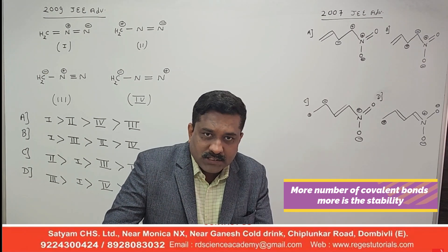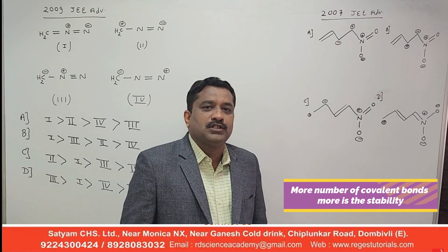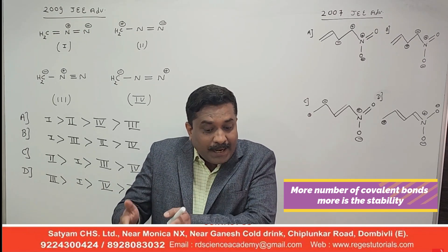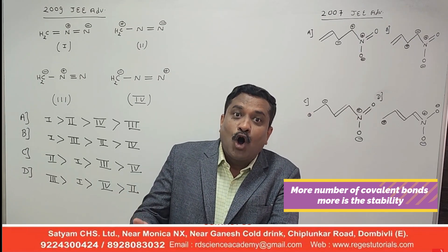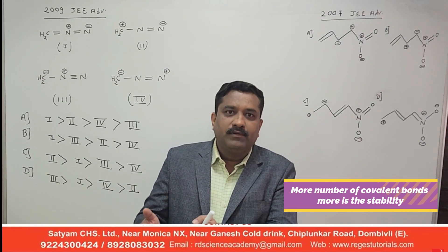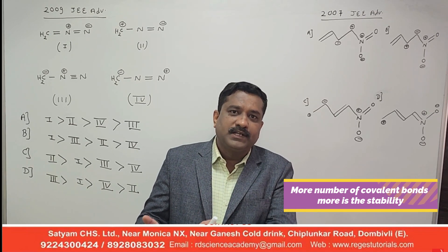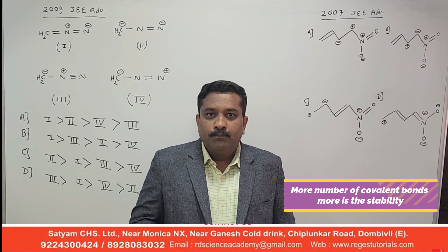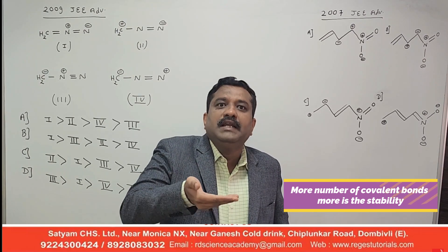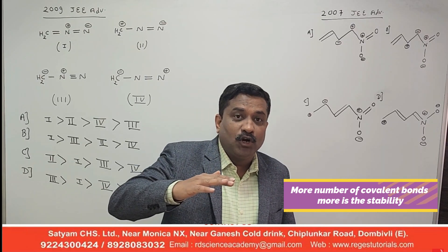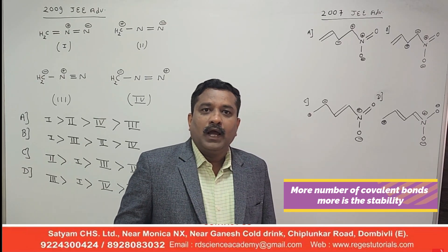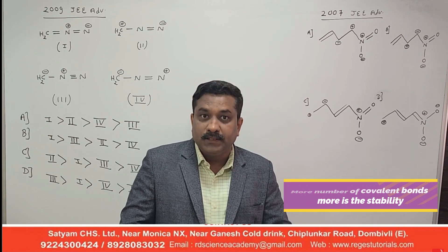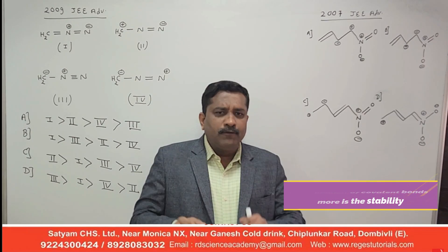If more covalent bonds are present in a resonating structure, that structure will get more stability. When one extra bond forms in an organic compound, the compound releases energy — bond formation results in release of energy, so the energy level of the compound reduces and the compound gets more stability. So: more covalent bonds means more stability. That is Rule 1.